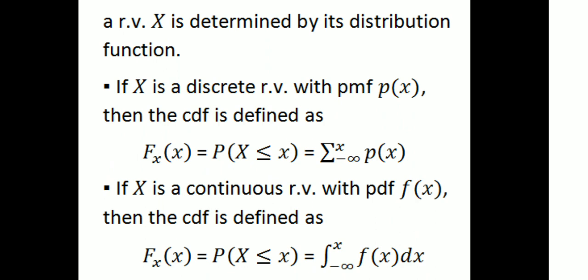Next, if x is a discrete random variable with probability mass function p(x), then the CDF — that is, the cumulative distribution function, or distribution function — is defined as F(x) = P(X ≤ x) = summation from minus infinity to x of p(x).